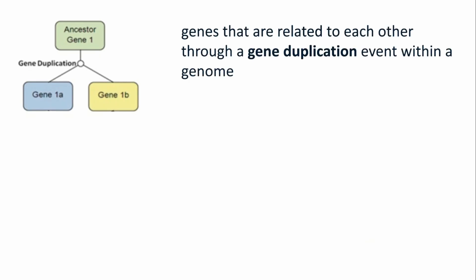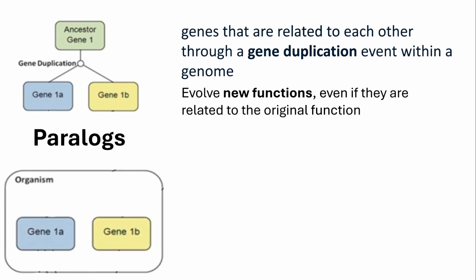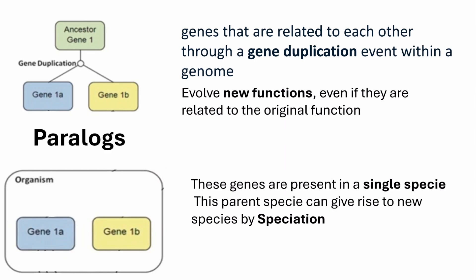These two genes have been duplicated from a single gene. These are known as paralogs of each other. Paralogs usually have different functions because of no selection pressure on them. Remember, these two genes are present in a single species which can give rise to new species by speciation.